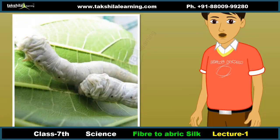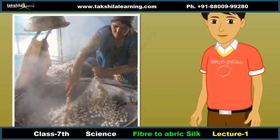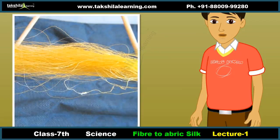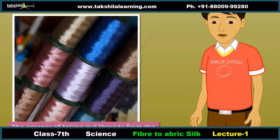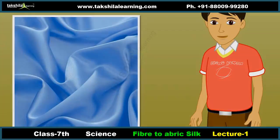Silk is processed from cocoons. Once the silk worms spin a protective cocoon around themselves, these cocoons are boiled in hot water to separate the silk fiber from the worms. Each cocoon is made of one single silk thread. The trick is to locate one end of the thread — then it is easy to unwind the silk thread from the cocoon. The process of taking out threads from the cocoon for use as silk is called reeling. These silk threads are then used to manufacture silk fabric.